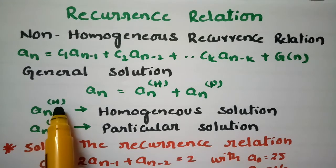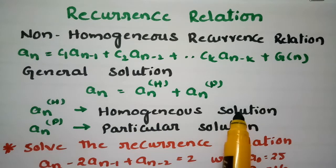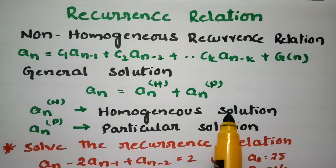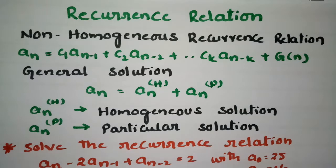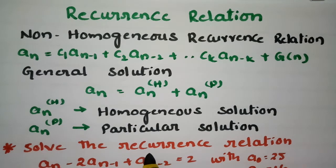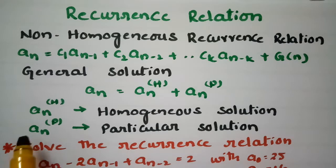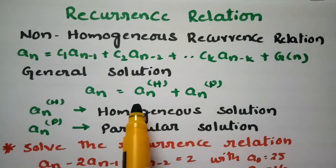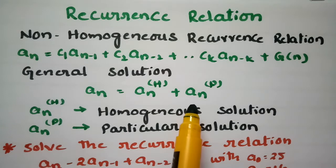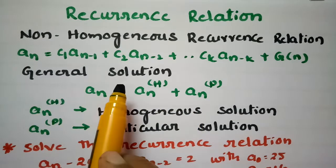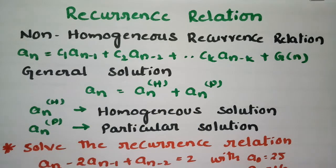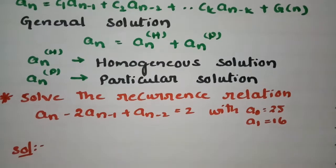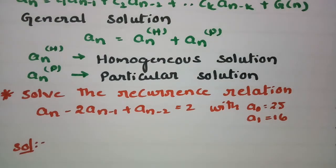Here a_n^(h) is the homogeneous solution. In my previous videos I showed how to find homogeneous solutions, and now I am going to explain the particular solution. a_n^(p) is the particular solution. Adding the homogeneous solution and the particular solution gives the general solution of the non-homogeneous recurrence relation.